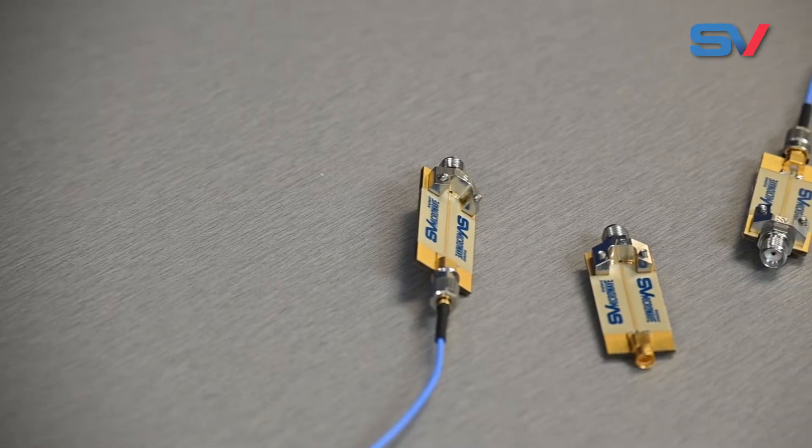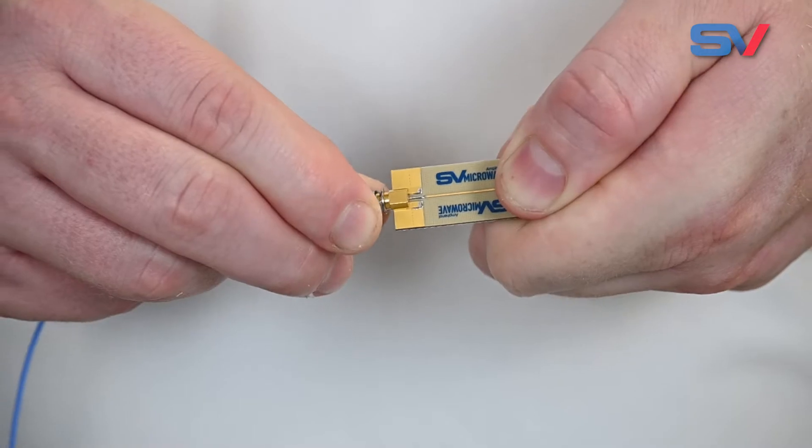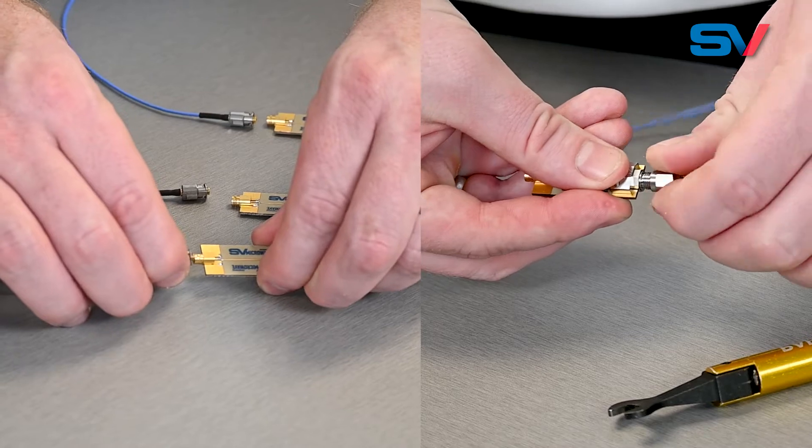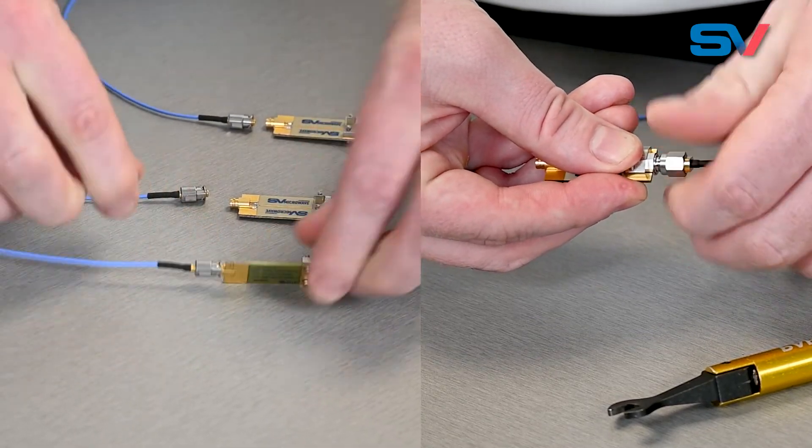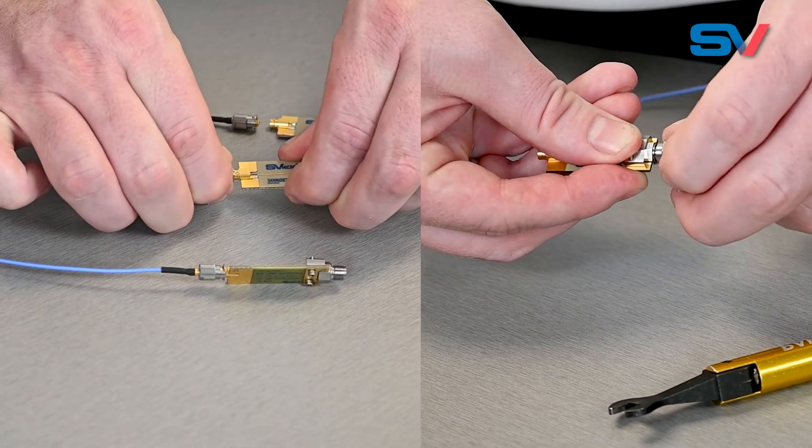There are many benefits to the Quarterback line but it boils down to the secure mating within a high density solution. Our QB line requires minimal insertion force equivalent to that of a smooth bore detent while still providing a fully retained connection similar to a threaded coupling nut like an SMA.